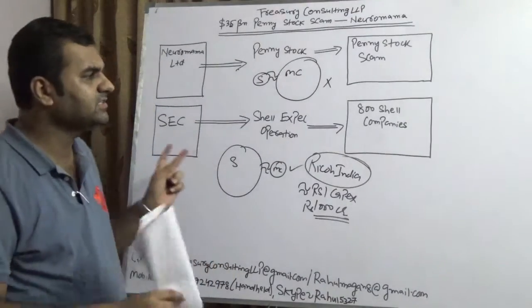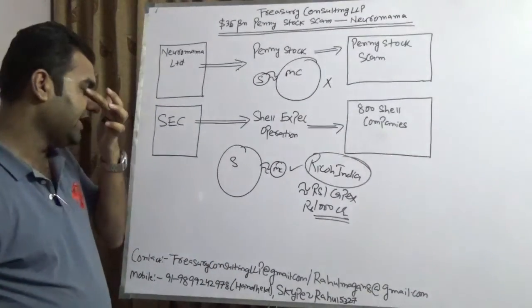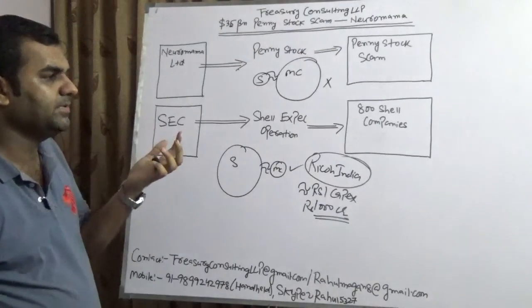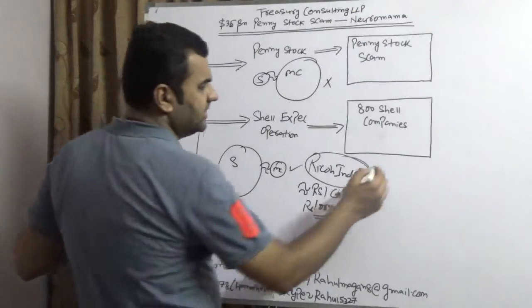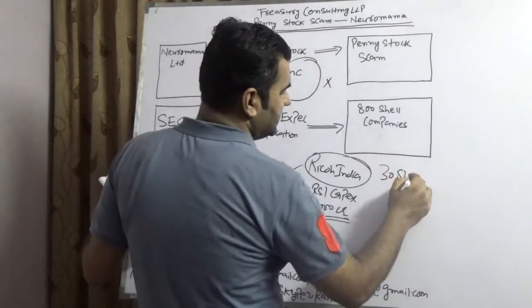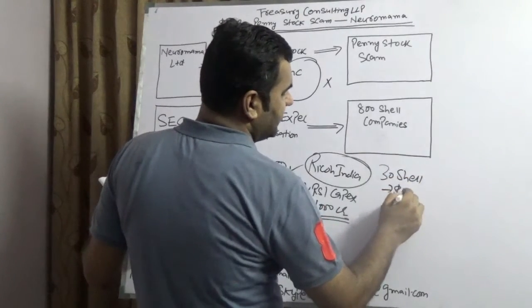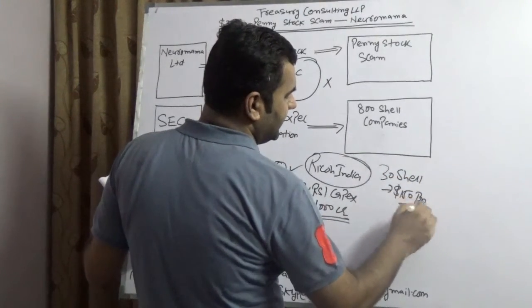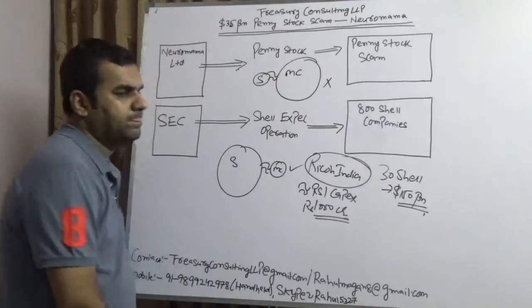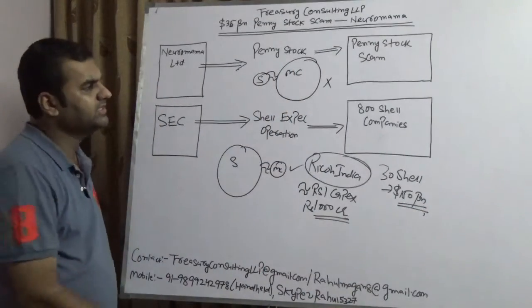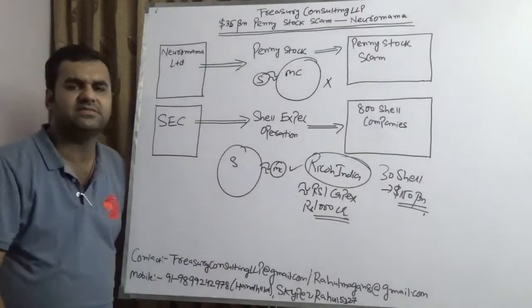What would happen if several years down the line, we will get to know that India is having more than 30 shell companies, say India is having more than 30 shell companies who have collectively 150 billion dollars of market capitalization. Why the regulators in India are not understanding that there are several Neuromama exist in India as well.